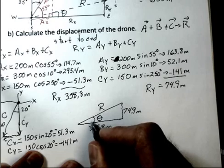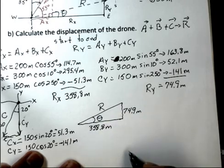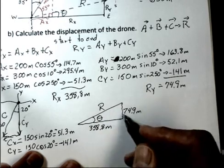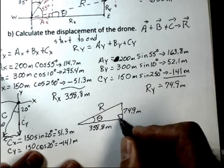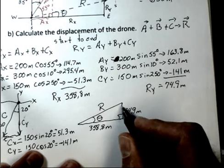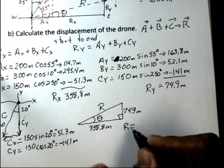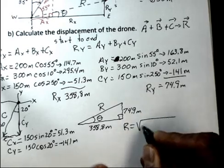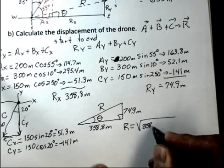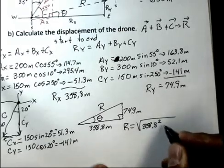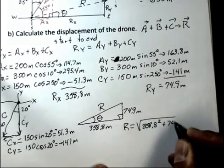The length is the hypotenuse. And for a vector, displacement's a vector, we also need the angle. Well, if we have two sides of a right triangle, again, these are x and y components, so they're 90 degrees from each other. It is a right triangle. We use Pythagorean theorem, of course, to come up with a value for the length of R. So 358.8, that will be squared. And then plus 74.9, also squared.